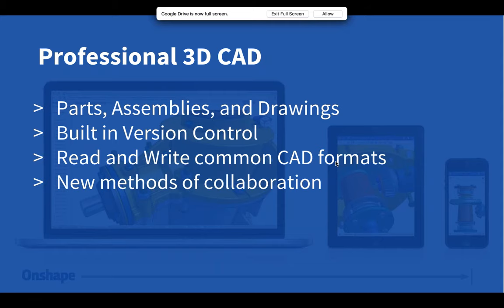The last thing I want to mention is entirely new methods of collaboration. With Onshape, we've introduced entirely new features for collaborative CAD that simply didn't exist before — things like real-time collaboration. These real-time capabilities come from an architecture shift, a redesign of a CAD tool. Starting from scratch gives us a lot of unique capabilities.